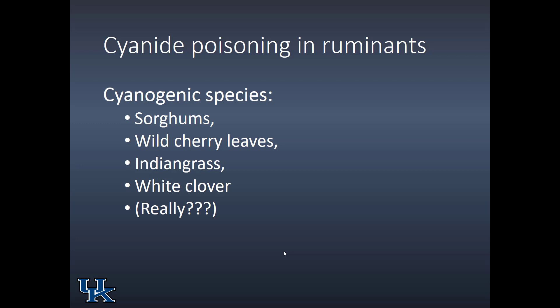White clover also has prussic acid potential — and yes, really white clover. This was brought home during the mare reproductive loss syndrome, when we were trying to figure out what in the environment was causing pregnant mares to abort. Looking at all toxic plants that might be in horse pasture, you find that certain varieties of white clover are known to have a fair amount of prussic acid potential — not as much as some other plants, but notable. Horses may be sensitive to prussic acid, though the thresholds are not very clear. We did conduct experiments dosing horses with cyanide; it caused them to be uncomfortable and sweat, but it did not cause them to abort.